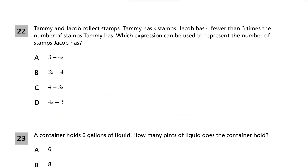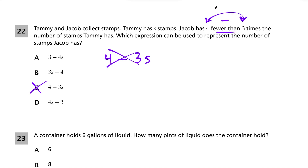Question 22: Tammy has s stamps and Jacob has four fewer than three times the number of stamps Tammy has. Be very careful — it's tempting to say 'four fewer than means minus' and write 4 − 3s. But choice C is a dangerous trap. 'Four fewer than' means we subtract four after — so three times s, then minus four at the end: 3s − 4. Choice B is our answer.